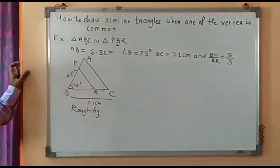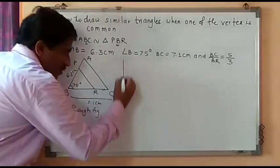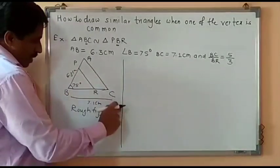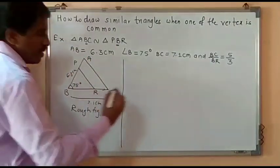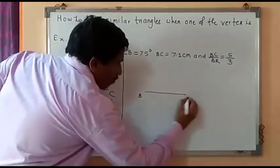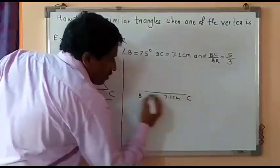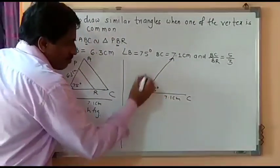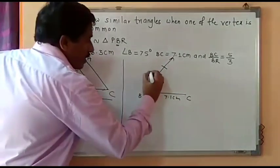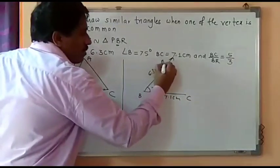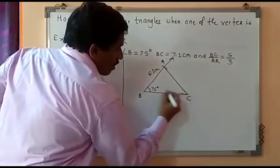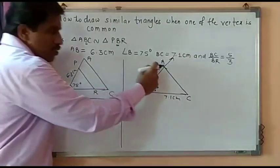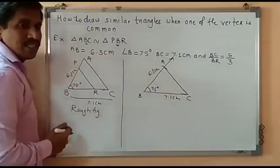Now, how to draw the fair figure? For the fair figure, first we will draw triangle ABC as we are given BC, AB, and angle B. So first, I will draw BC which is 7.1 cm, then draw angle B of 75 degrees, and from there draw a 6.3 cm arc to get point A, giving us triangle ABC — the larger triangle. Our smaller triangle will lie inside this triangle.